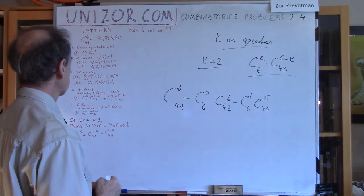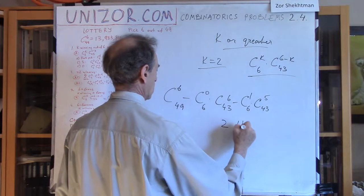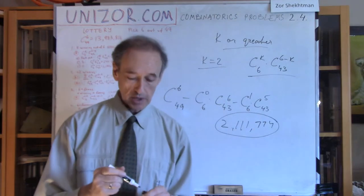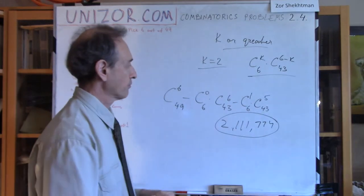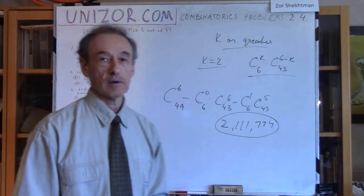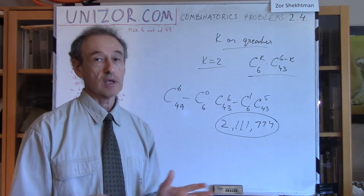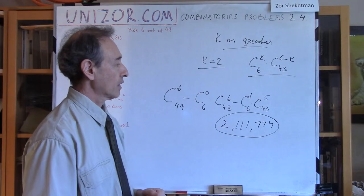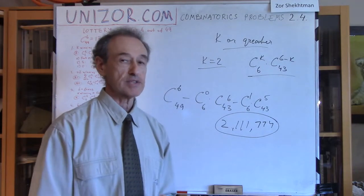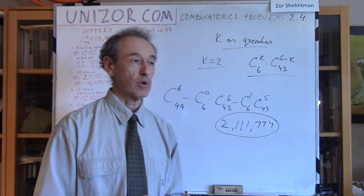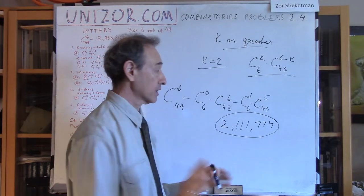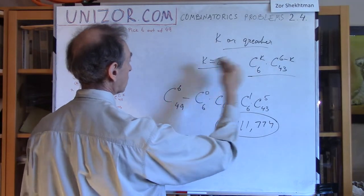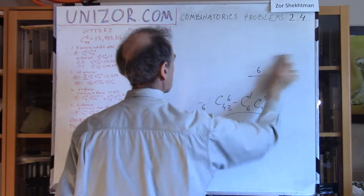The result is 2,117,474. So about 15% of the cases are winning. The rest are 0 or 1 winning numbers and you don't win anything. So in about 2 million out of 14 million — which is about 15% — there is some return. 85% of lottery tickets bought by people are not winning at all.